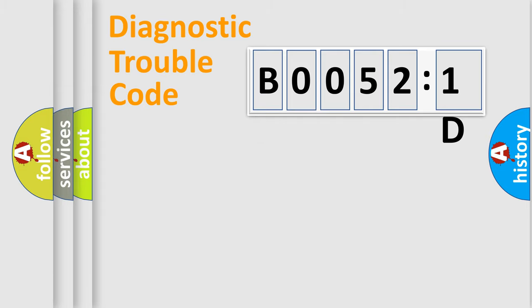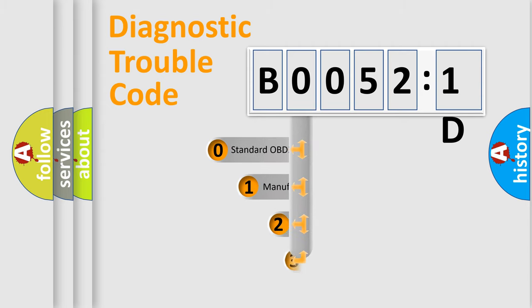Powertrain. Body. Chassis. Network. This distribution is defined in the first character code.